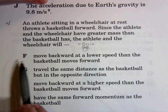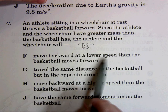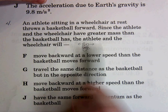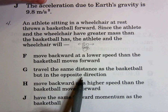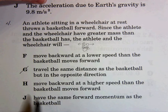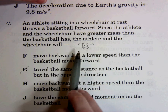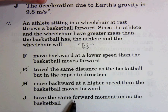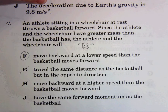Looking at the answer choices: F says 'the athlete and wheelchair will move backward at a lower speed than the basketball moves forward' — that already looks good. G says they travel the same distance as the basketball but in the opposite direction — no, because they have much more mass. H says they move backward at a higher speed than the basketball — definitely not. J says they have the same forward momentum as the basketball — they won't move forward, they'll move backward. So F is the correct answer.